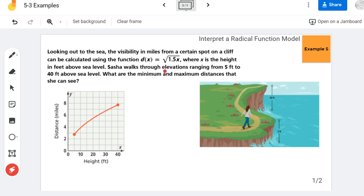So it says, Sasha walks through elevations ranging from 5 feet to 40 feet above sea level, and they want to know the minimum and maximum distances that she can see.